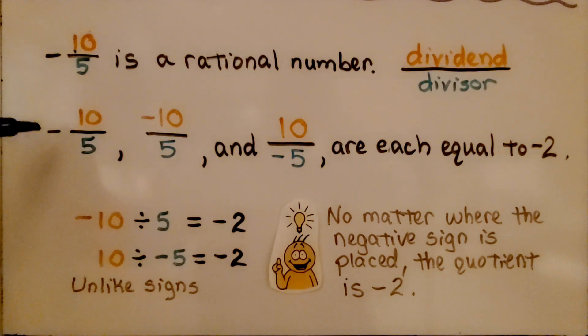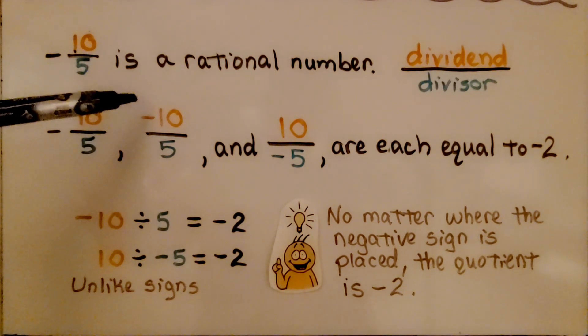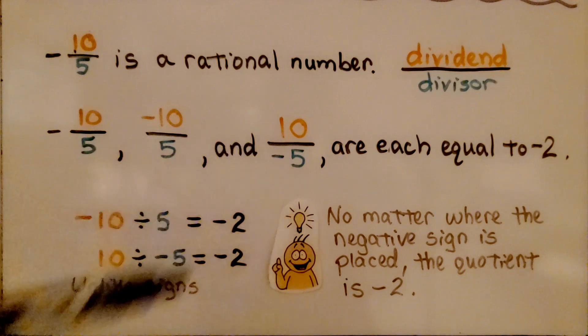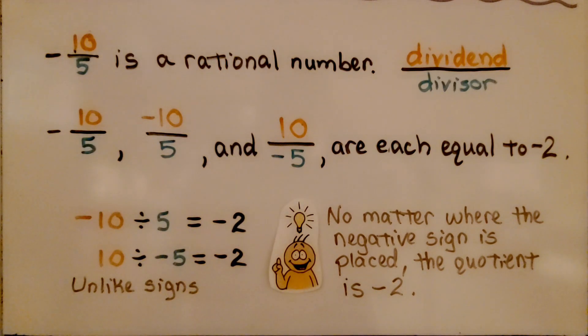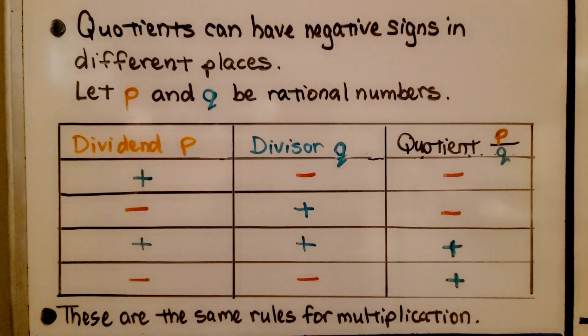We can place the negative sign here — outside the fraction — we can place it up with the numerator, or we can place it down with the denominator. The quotient is still negative two. Quotients can have negative signs in different places.